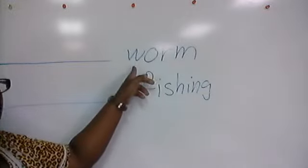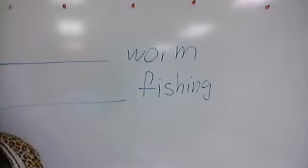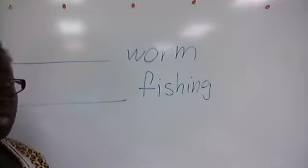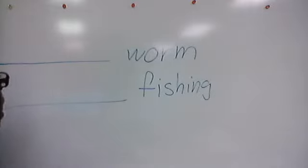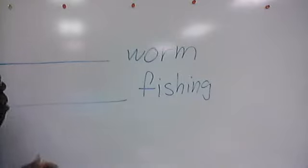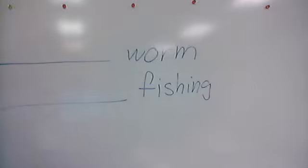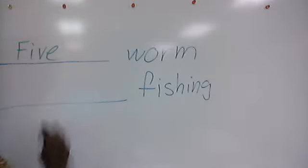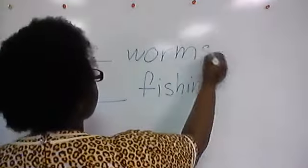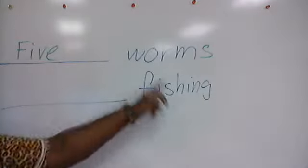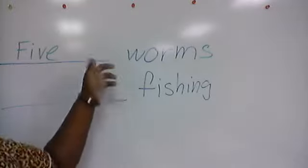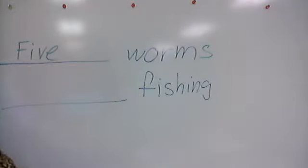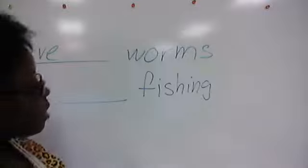Taking a look at the first word: 'worm' — is it a person, place, or thing, or does it show action? Well, 'worm' is a thing, so we need to think of an adjective because adjectives describe nouns. Adjectives answer the question 'what kind' or 'how many.' I'm going to answer 'how many' and put 'five.' So 'five worms' — 'five' is my adjective describing how many worms.